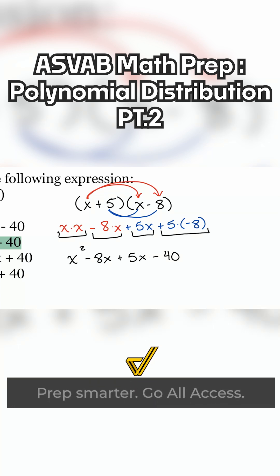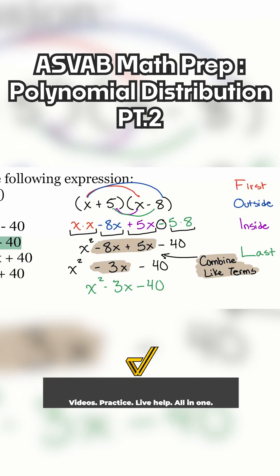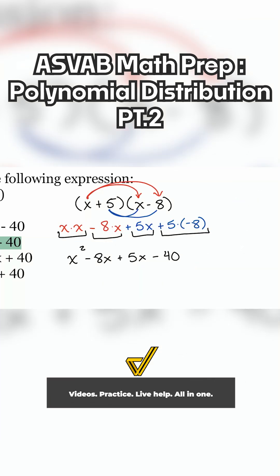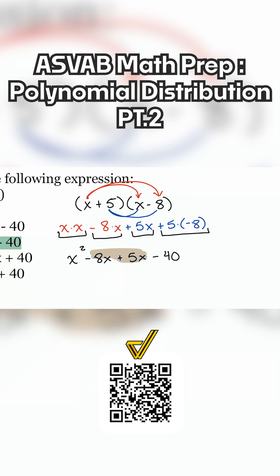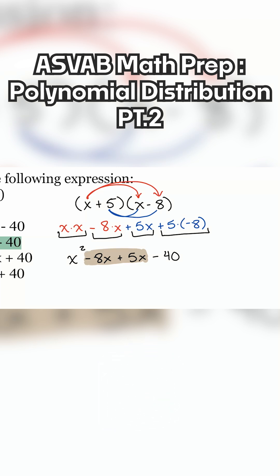So notice how we ended up at the same exact spot with less to write down. And now all we have to do is combine those like terms, just like we did before. And we're set: negative eight x plus five x. Everybody, what's that going to be? Just like we saw before. Yeah, negative three x.